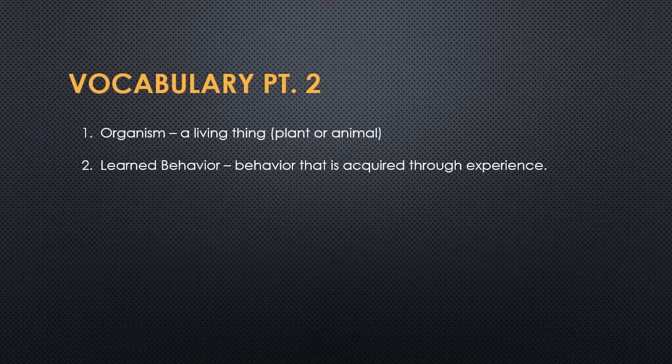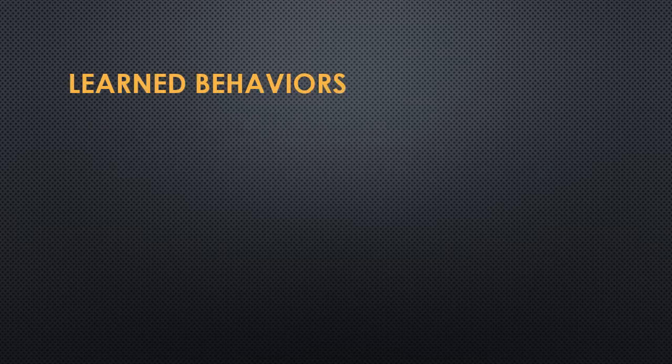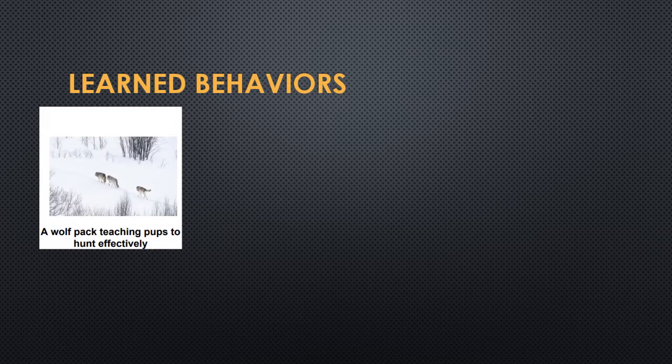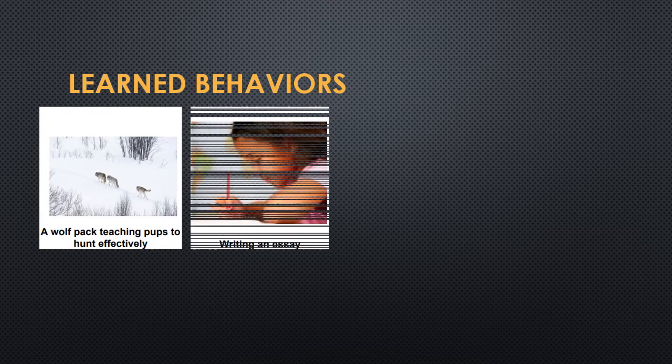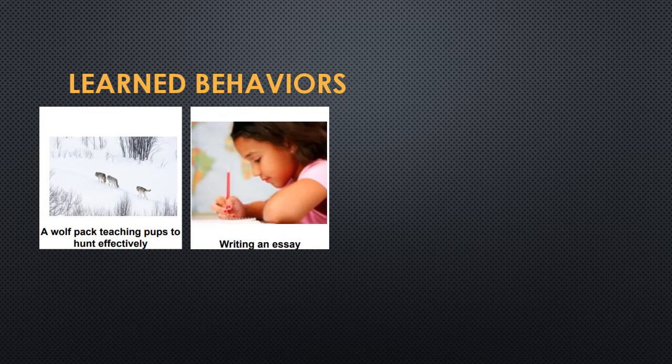Now that we've talked about inherited traits and acquired traits, let's talk about learned behavior — behavior that's acquired through experience. We're going to be talking about learned behaviors of organisms, of living things, plants, or animals. A learned behavior example: a wolf pack teaching pups to hunt. Wolf puppies are not born knowing how to hunt, so their parents or their pack have to teach them, and then they'll pick up those hunting skills. It's something passed down through practice.